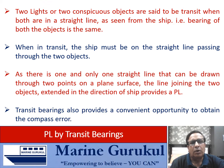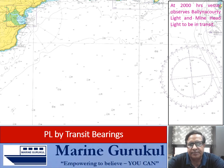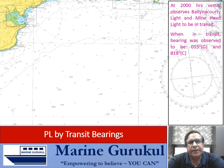Transit bearings also provide a convenient opportunity to obtain the compass error. Let us understand the transit bearing and its use for getting the compass error through a simple example. At 2000 hours, a vessel observes Balina Coty light and Mine Head light to be in transit. When in transit, the bearing was observed to be 015 degrees gyro and 018 degrees compass.